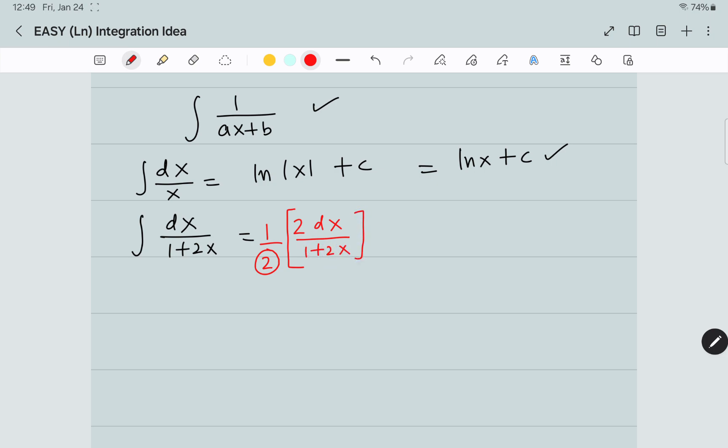Now look at the term. The derivative of 1 is 0 and the derivative of 2x is 2. So it is available. The answer is 1 by 2 ln absolute value of 1 plus 2x plus c.